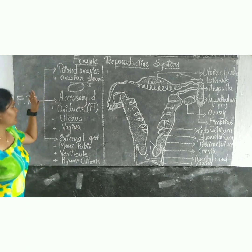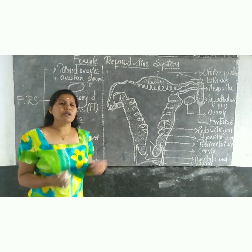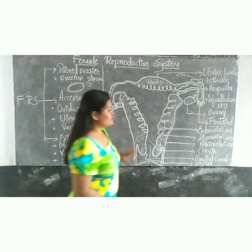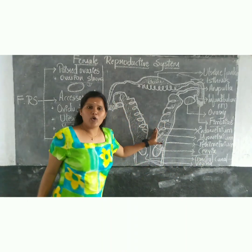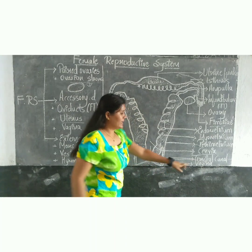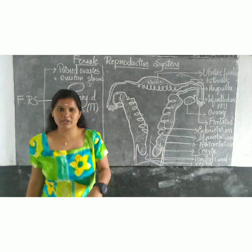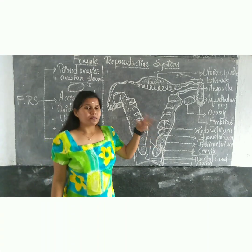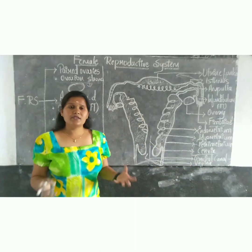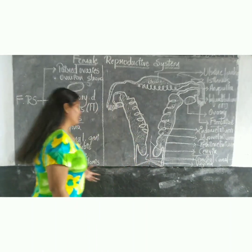So we have covered the paired ovaries and accessory ducts. Moving to external genitalia — there is also a duct called the cervix, which is the narrow opening connecting the uterus to the vagina. The cervical canal is the cavity of the cervix and acts as the birth canal through which the baby comes out through the vagina.